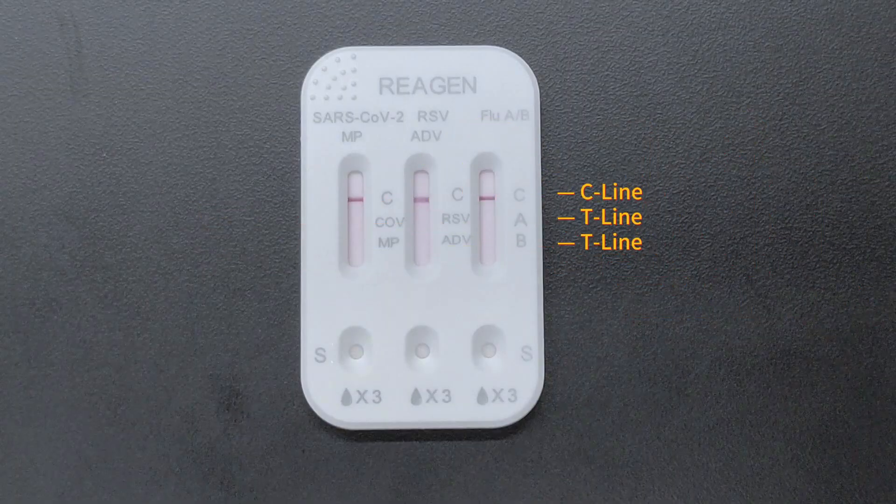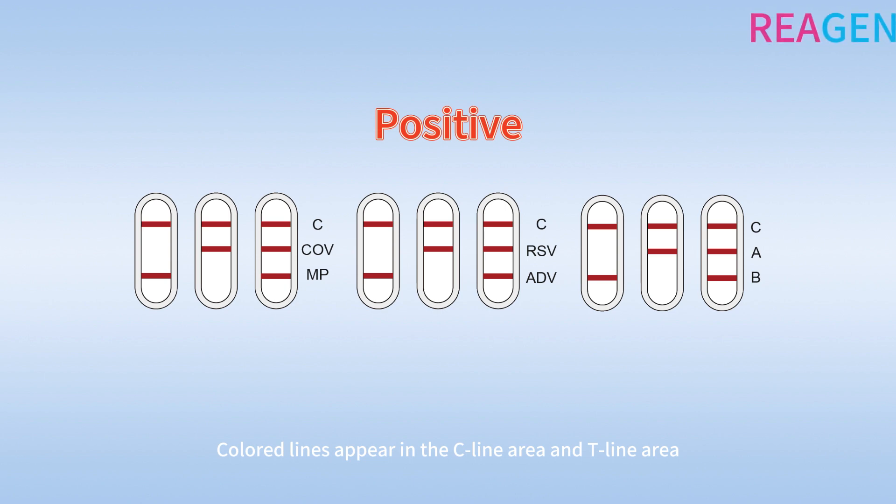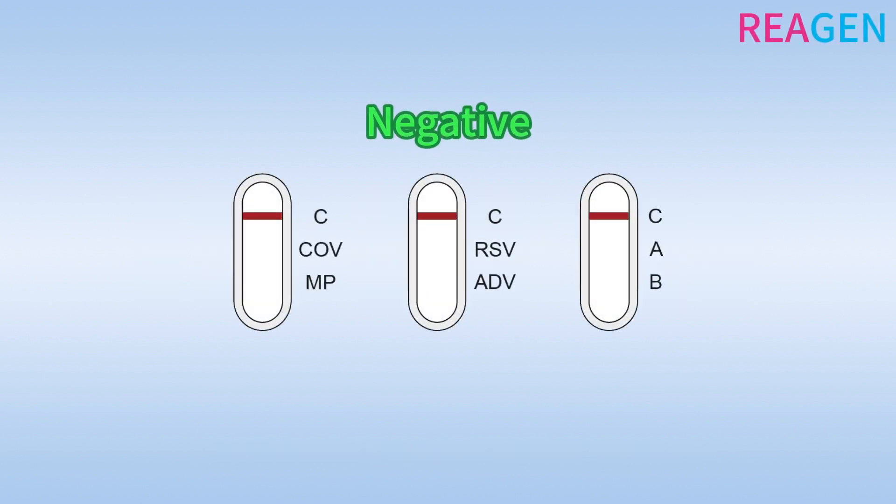Result Judgment. Positive: Colored lines appear in the C-line area and T-line area. Negative: Colored lines appear in the C-line area, while no colored lines appear in the T-line area.